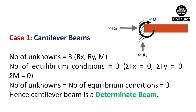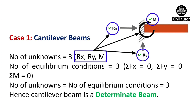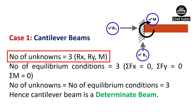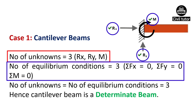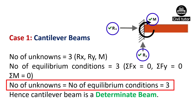For cantilever beams, it has two ends — a fixed end and a free end. The fixed end develops three types of reactions: vertical reaction, horizontal reaction, and moment reaction. The number of unknowns will be equal to three — support reactions Rx, Ry, and moment M. The number of equilibrium conditions is also equal to three. So the number of unknowns equals the number of equilibrium conditions, which is three.